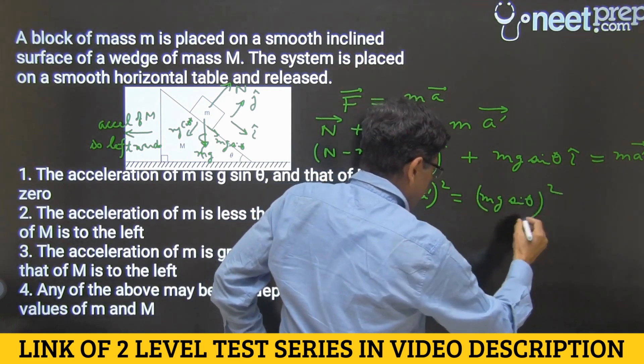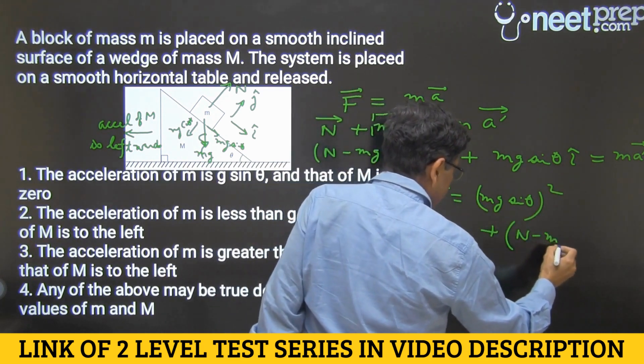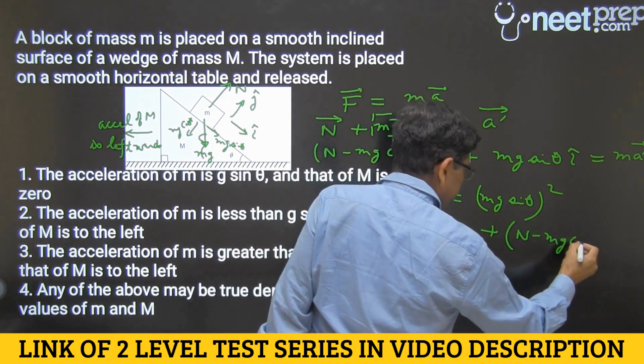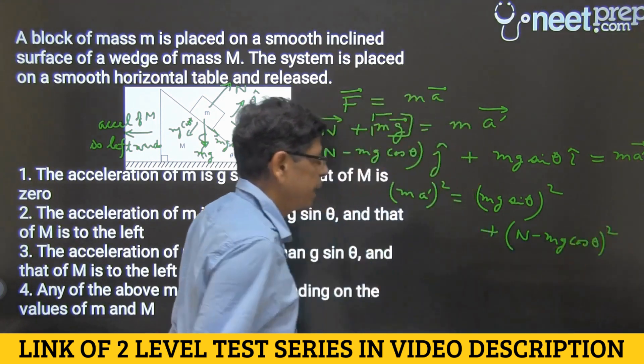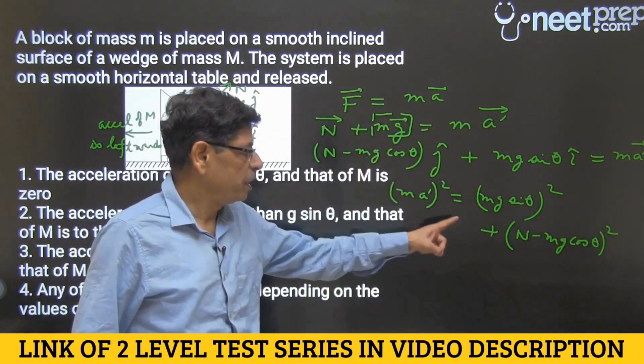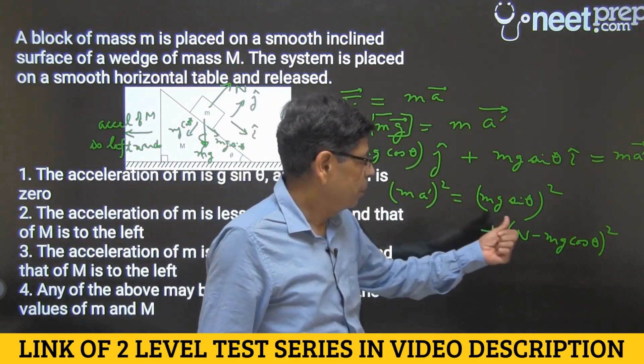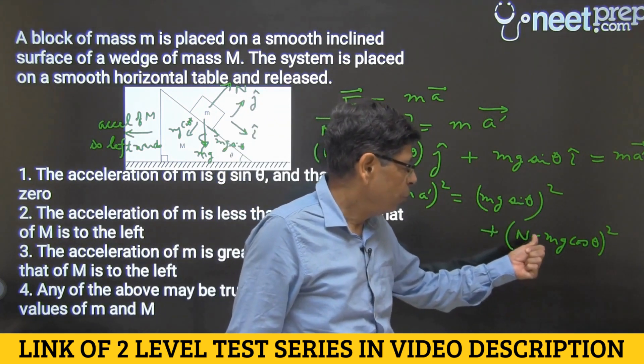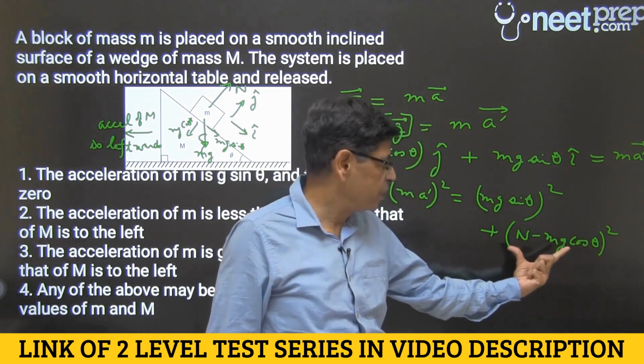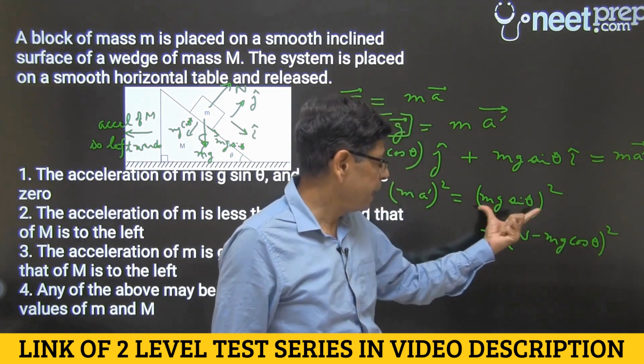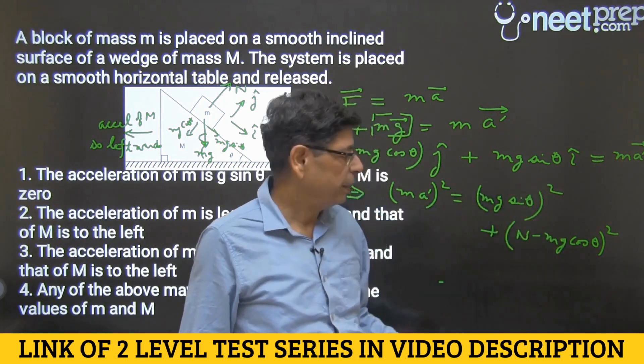squared plus n minus mg cos theta squared. From the previous step we can conclude this, which means that whenever n would be less than mg cos theta, this will leave some value which will get added to this, and so acceleration a dash would be greater than g sin theta.